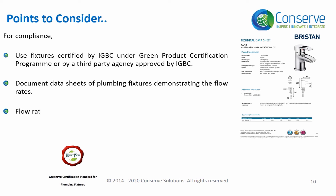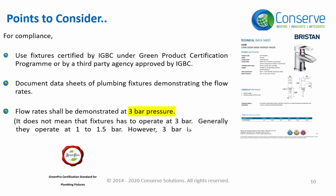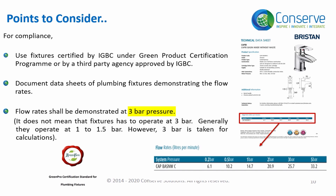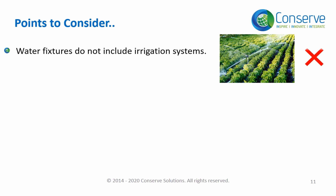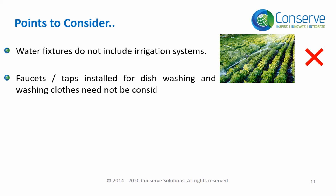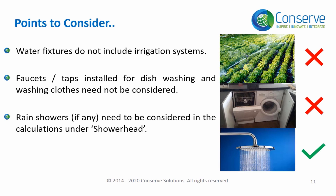It has to be noted that compliance of flow rate shall be documented at 3 bar. It doesn't mean that the plumbing fixtures have to operate at 3 bar. Generally, plumbing fixtures operate at 1 to 1.5 bar. The flow rate at 3 bar is taken as the conservative side for the calculation. This credit does not consider water fixtures used for irrigation, cloth washing, and dishwashing. If the project has rain showers, it is considered as a shower.